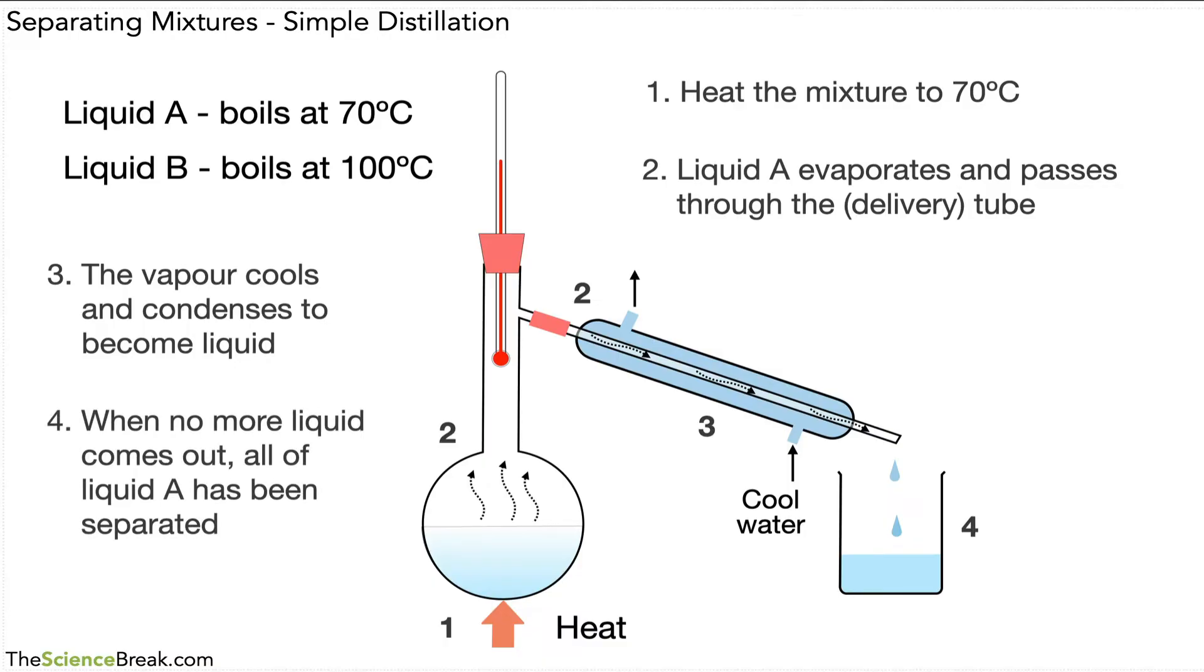When no more liquid comes out, all of Liquid A has been separated. You might think we could now heat to 100 degrees C to get the other liquid, but actually Liquid B is in the container—it's the only liquid there—so we wouldn't need to separate that out at all.